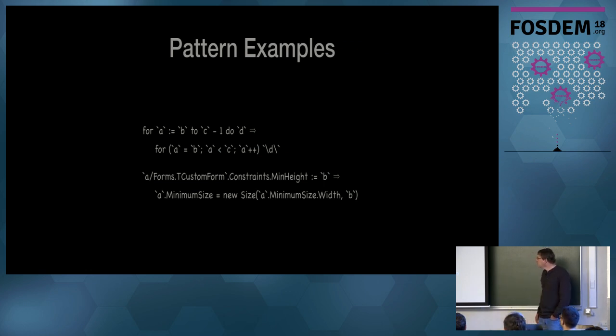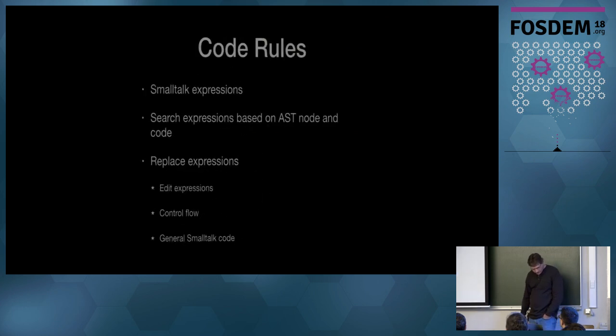The second one is actually some code that, in .NET, you're not able to set the minimum size or the minimum height of a window by itself. You have to set the minimum size, which includes the height and the width. So, what we do is, whenever on that A slash forms T custom form, what that's essentially saying is we're going to match something, we'll call it A, but it has to be of type T custom form. So if you're doing it from some other thing, it's not going to match. So, the type of whatever A is has to be a T custom form.